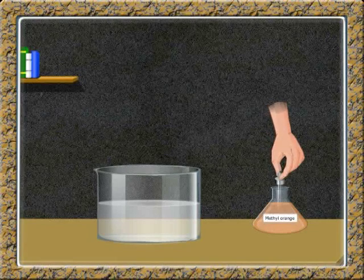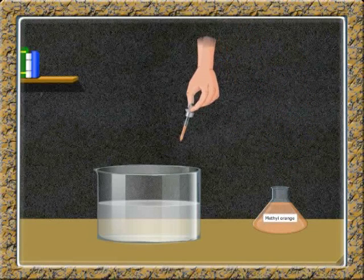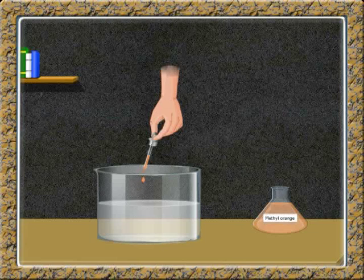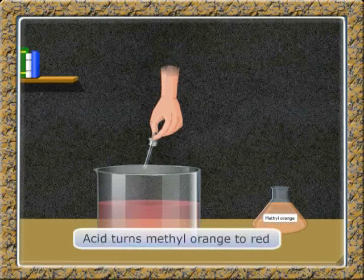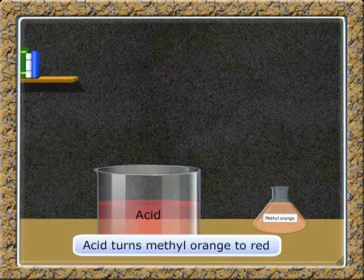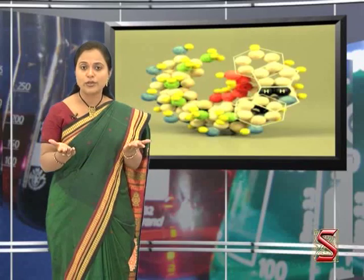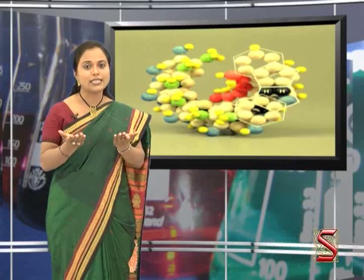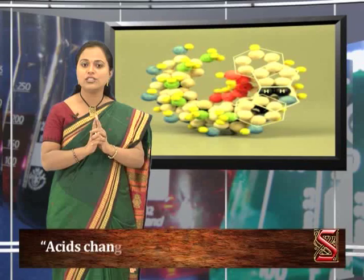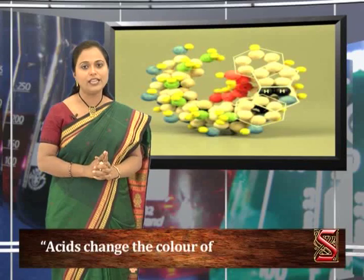Now take this solution and put methyl orange into this. Notice, the solution changes to red. So the solution must be acidic. Thus, we can say that acid turns methyl orange to red. From these two observations, we can say that acids change the color of the indicators.